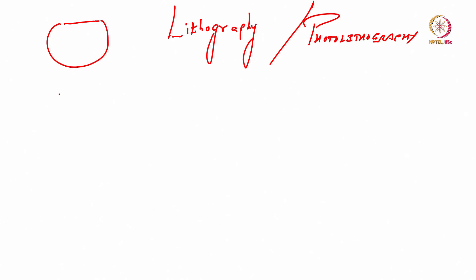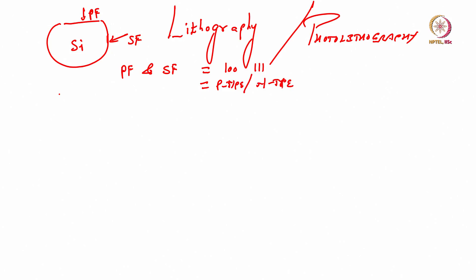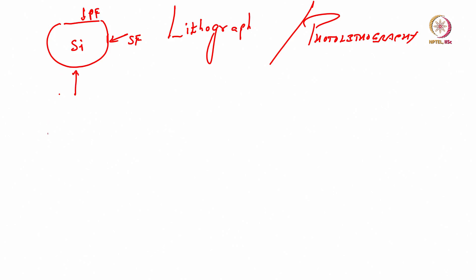If I take a silicon wafer — it has a primary flat and possibly a secondary flat. Depending on the primary and secondary flat, wafers are identified as 100 or 111 orientation, and as p-type or n-type. If I take a cross section of this wafer, this is what it looks like — this is my silicon wafer.